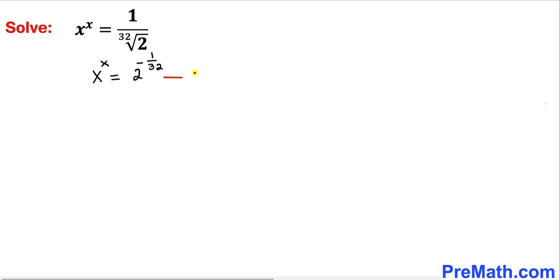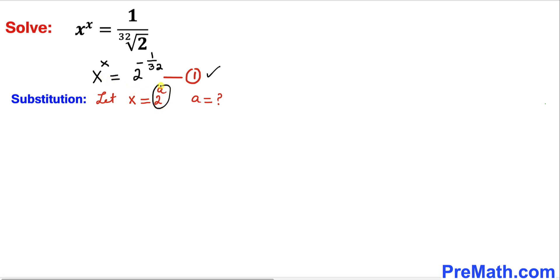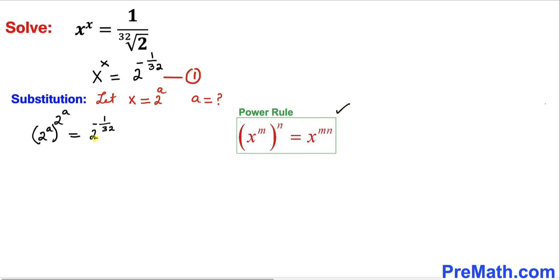Let me call this equation number 1. Now we are going to solve for x using substitution. Let x equals to 2 power a, where we want to find the value of a. Then equation 1 becomes: replacing x with 2 power a, the left hand side is 2 power a, whole power 2 power a, equals to 2 power negative 1 divided by 32.